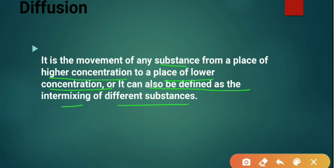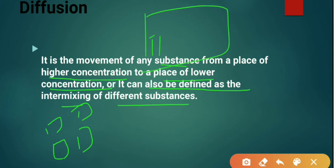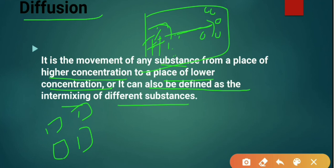Let us understand with the room example. In the room, the agarbatti is burning in one corner — so the fragrance concentration is higher there. The particles then move toward where the fragrance is less — that is, from higher concentration toward lower concentration. This is what we call diffusion.